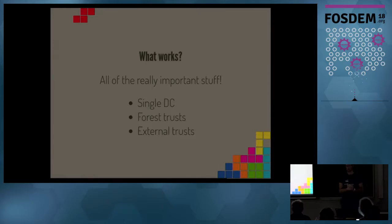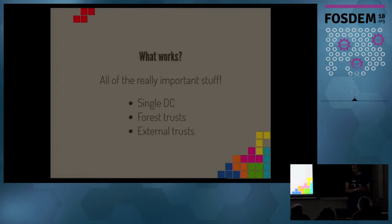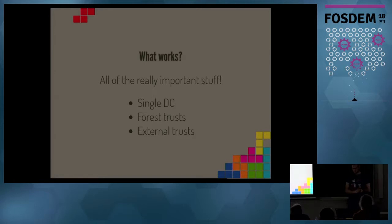All the important stuff is working quite well. Single DC works very well. Forest trusts are working, currently not with FreeIPA - there is one bug we need to fix. External trusts are also working. The problem is that this isn't really tested well in Samba self-test yet. I hope we can implement more tests related to trusts in the near future, and the groundwork code for that has recently gone to master.